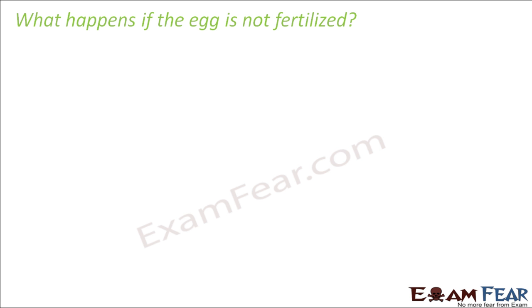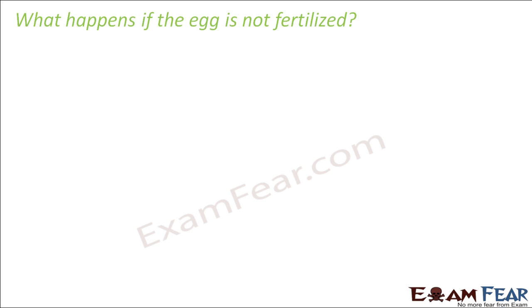What happens if the egg is not fertilized? It is not necessary that every time ovulation takes place, a male and female have to undergo sexual intercourse. Sometimes there might be no intercourse, so there are no sperms inside the female's body. The egg is going to get released every 28 days.